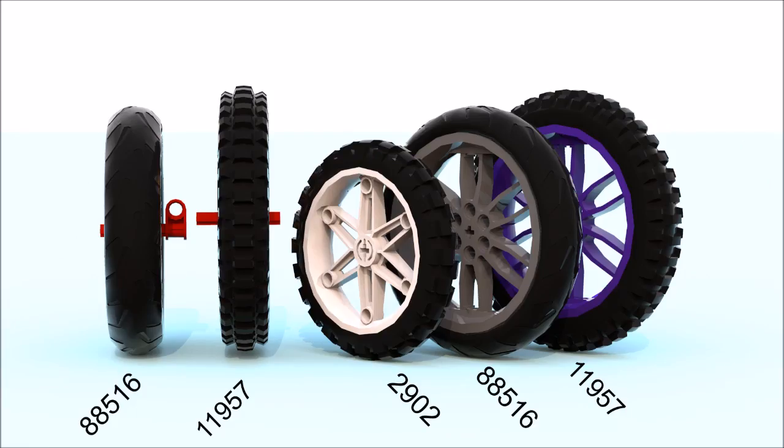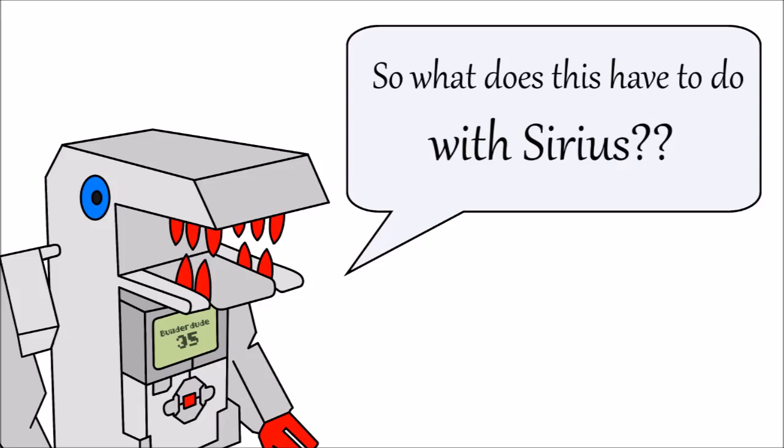I just wanted to note the difference in tread pattern, because this could have a slight effect on traction, but also affect the smoothness in the way your robot rolls as it drives. I think I've yammered on about these wheels for long enough, and I think it's about time I bring it back to the main purpose of this video, which is talking about these wheels in relation to Sirius.